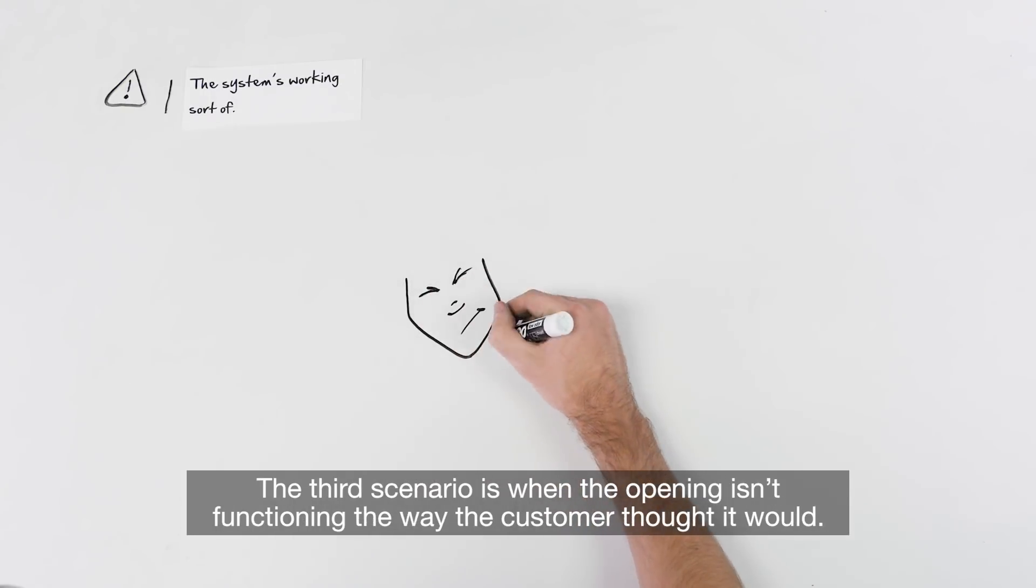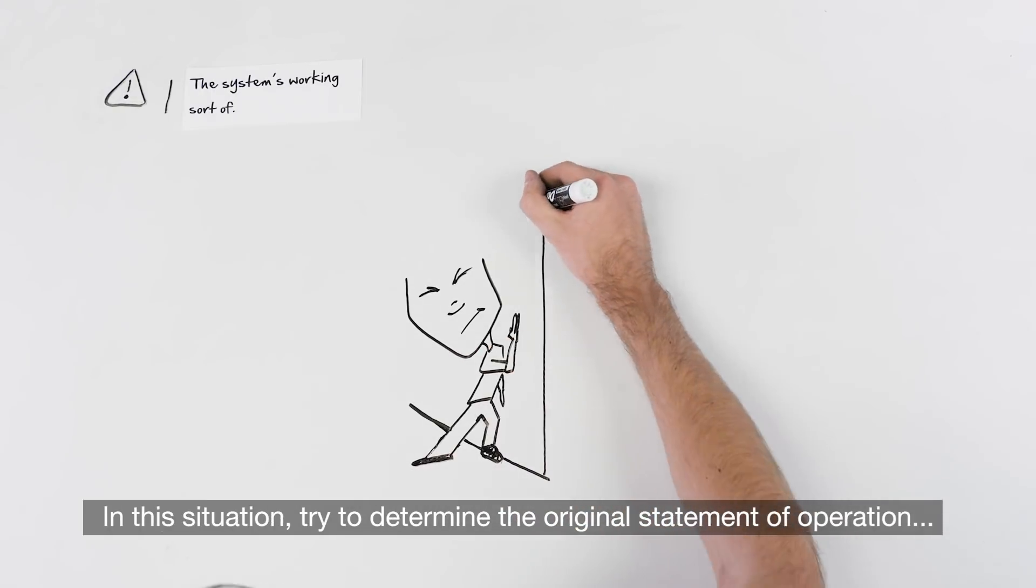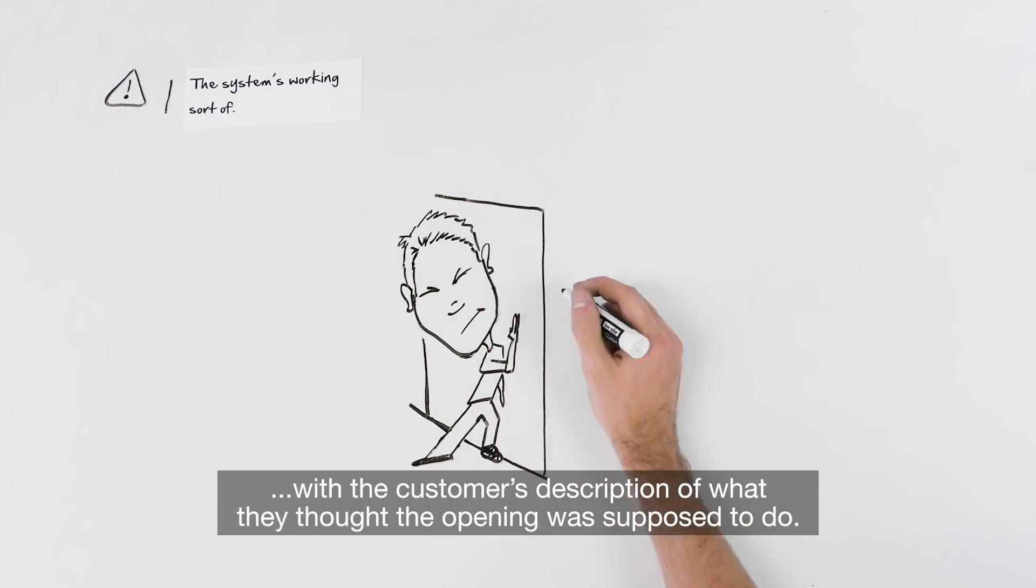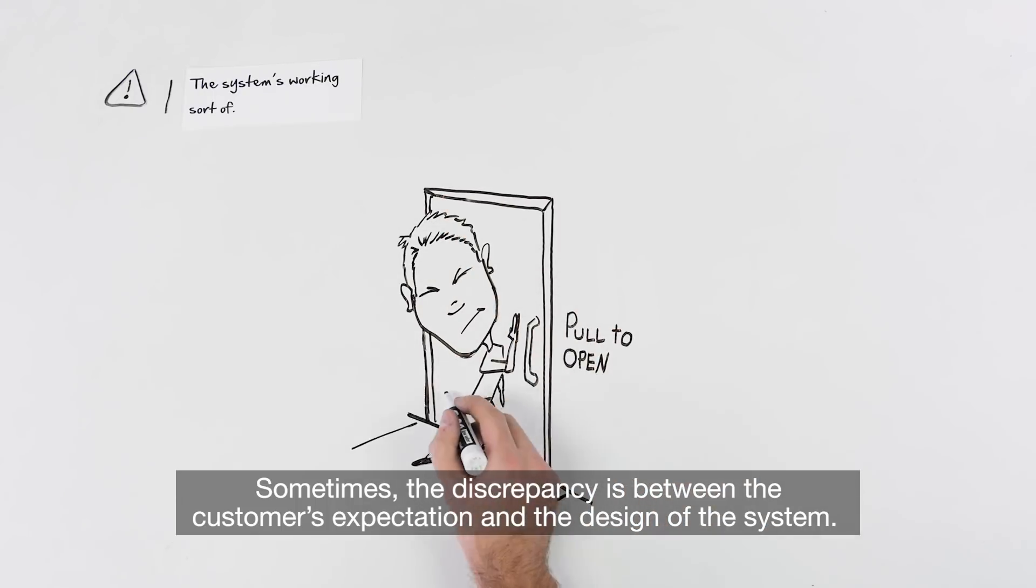The third scenario is when the opening isn't functioning the way the customer thought it would. Sometimes a door opening gets designed to operate in a way that differs from the customer's expectation. In this situation, try to determine the original statement of operation with the customer's description of what they thought the opening was supposed to do. Sometimes the discrepancy is between the customer's expectation and the design of the system.